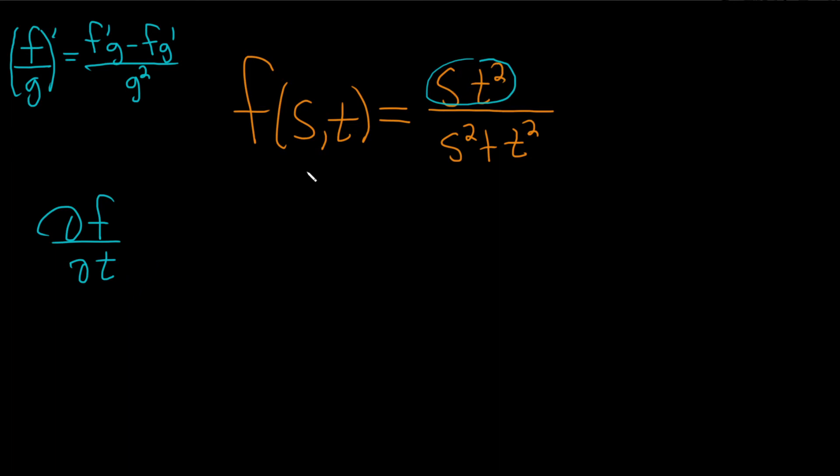So this s here will hang out, and we just differentiate the t. So we bring down the two and subtract one from the exponent. So that'll be 2st.